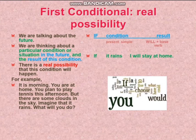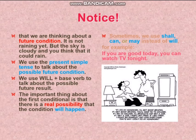So let's take the first conditional. You have to remember that it is about real possibility. We are talking about the future — thinking about a particular condition or situation in the future and the result of this condition. There is a real possibility that this condition will happen. For example, it is morning, you are at home, you plan to play tennis this afternoon but there are some clouds in the sky. Imagine that it rains. What will you do? If it rains, I will stay at home. Notice that we are thinking about a future condition — it's not raining yet but the sky is cloudy and you think it could rain. We use the present simple tense to talk about the possible future condition, and will plus base verb to talk about the possible future result. The important thing about the first conditional is that there is a real possibility that the condition will happen.